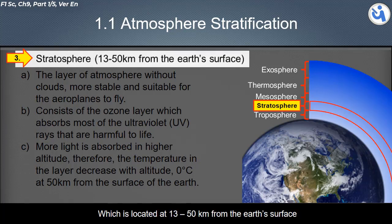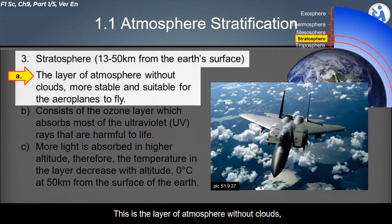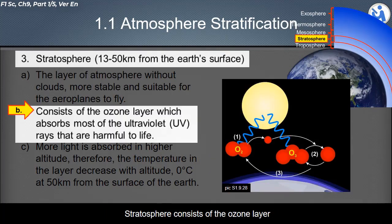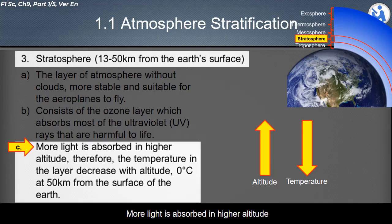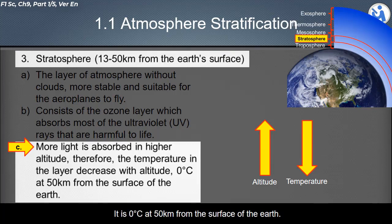The second layer of the atmosphere is the stratosphere, located at 13 to 50 kilometers from the Earth's surface. This layer is free of clouds, more stable, and suitable for airplanes to fly. The stratosphere contains the ozone layer, which absorbs most of the ultraviolet rays that are harmful to life. More UV is absorbed at higher altitudes, so temperature increases with altitude, reaching 0°C at 50 km.